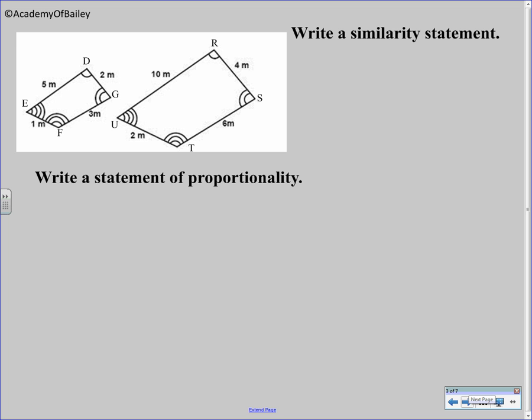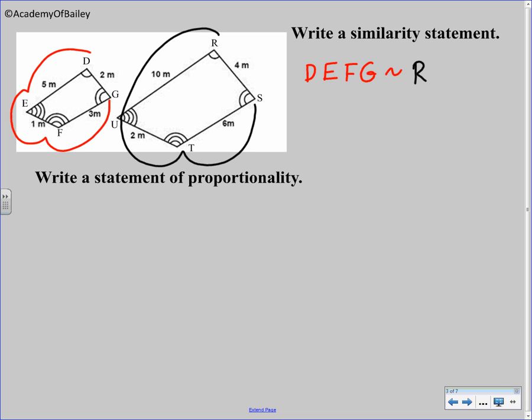In our situation, we would use that symbol to write a similarity statement, and I still have the same pictures from the left side. Looking at the figure on the left, I'm saying D, E, F, G is similar to how I went D to E to F to G. I have to make sure that I go R to U to T to S. R, U, T, S. So this is our similarity statement.